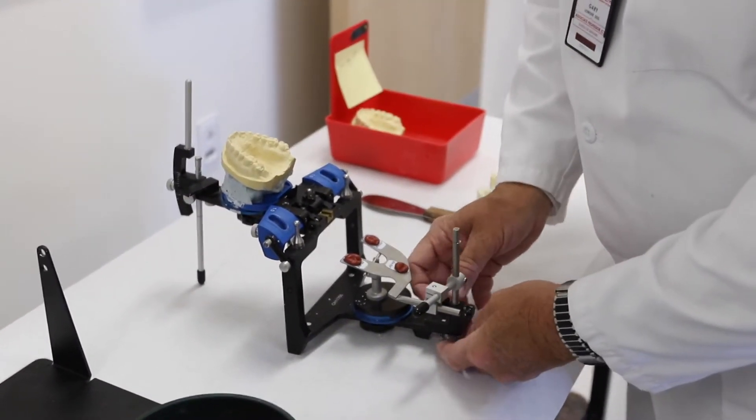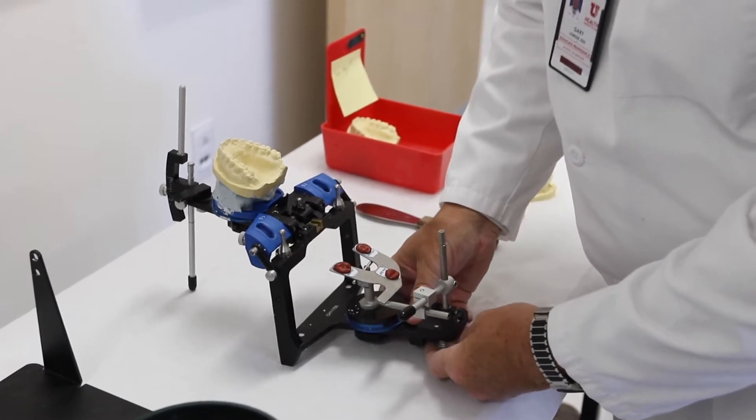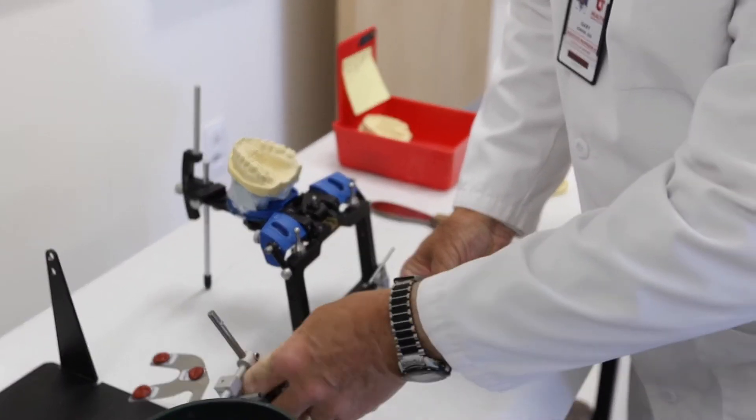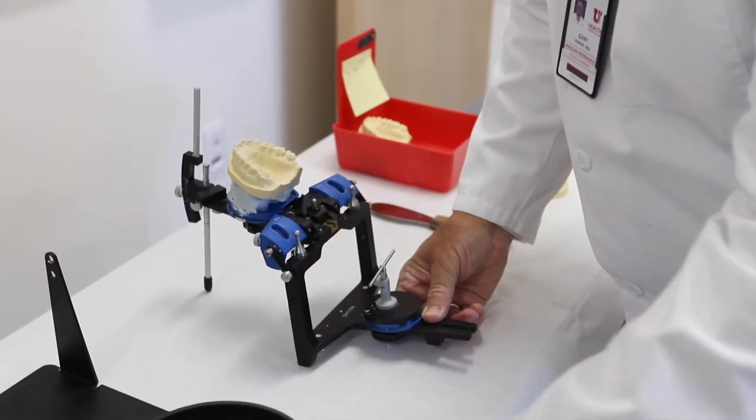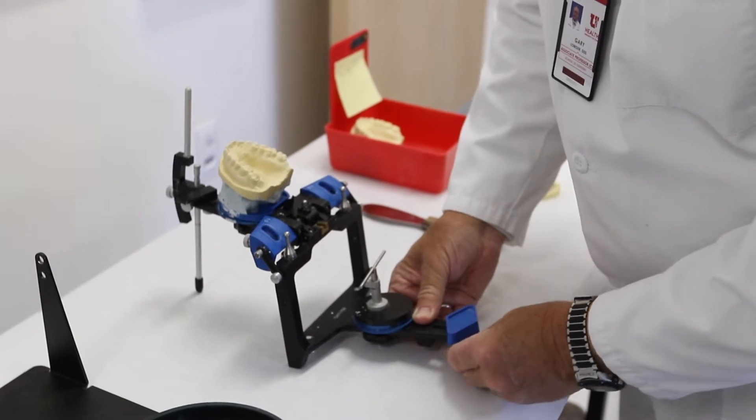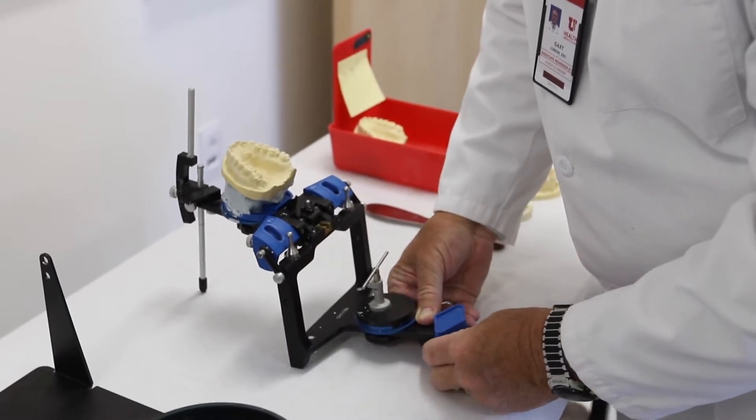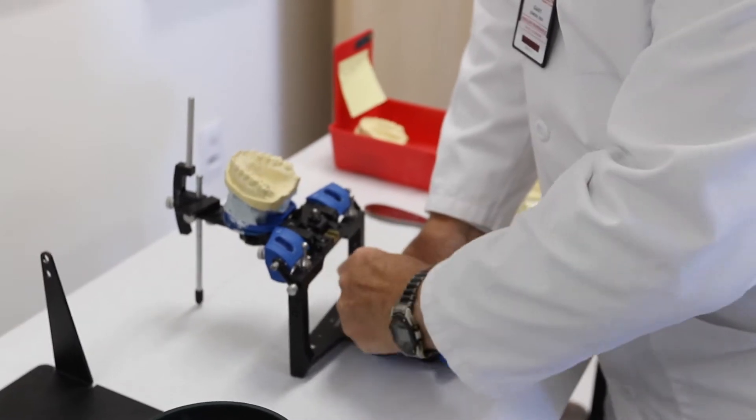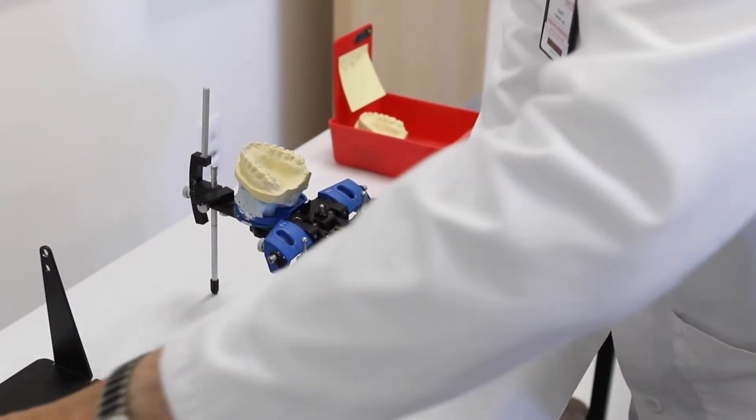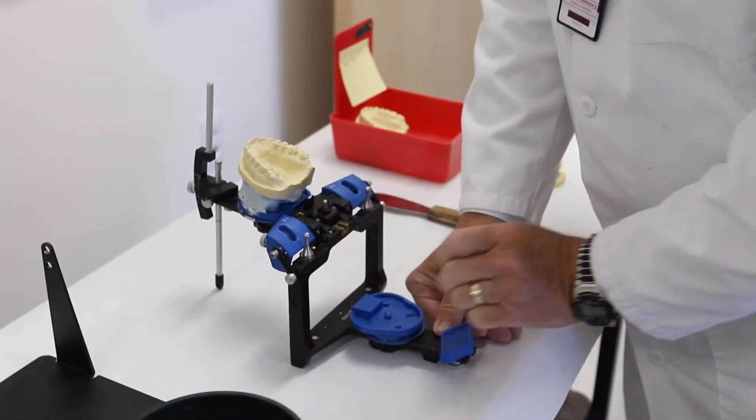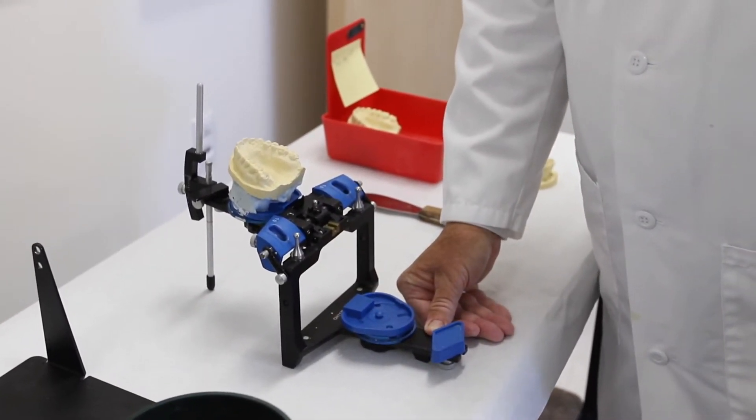Now you can remove the mounting fixture and bifurk assembly and replace that with the original incisal guide table and remove the support stand. And then it's time to place the new mounting plate for the lower model.